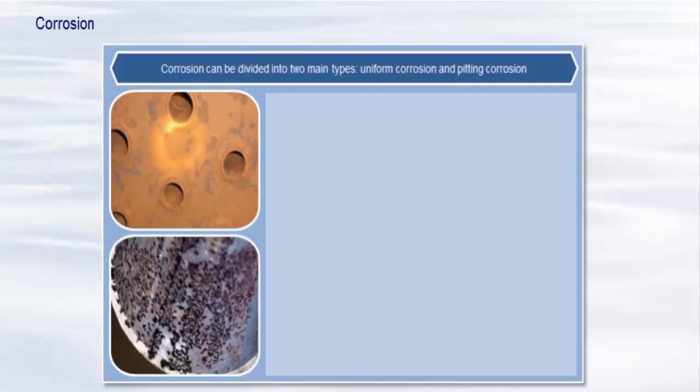Broadly speaking, corrosion can be divided into two types, uniform corrosion and pitting corrosion. Click on the pictures for more information.